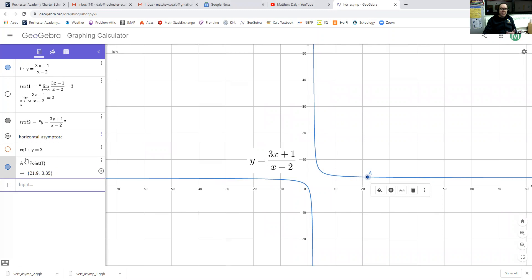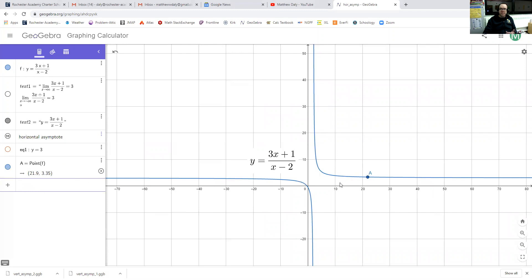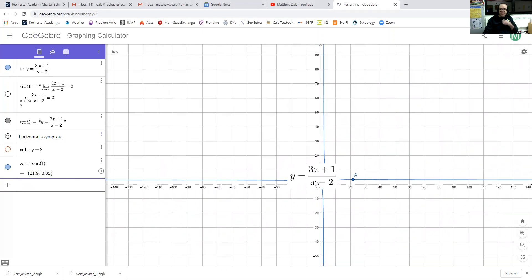All right, and you can pay attention to the coordinates of the point over here. This might be a really good place to keep your attention. So moving off here, I can see that our output value is 3.35 right now. And as the x value is getting larger and larger, the y value is dropping 3.2, 3.11,